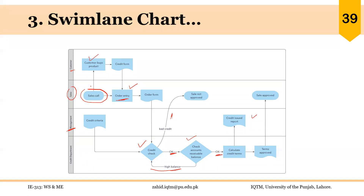Start of the activity, end of the activity. There are two possibilities in this case regarding the final activity: not approved or sales approved. You can see the different activities taking place in different departments — that is the benefit of this swim lane chart.